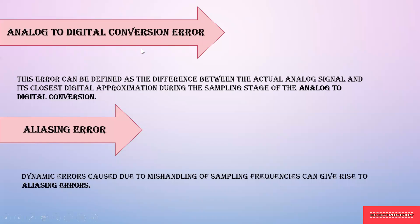Next is analog to digital conversion error. There is a difference between the actual analog signal and its digital approximation, because the sampling rate differs. When an analog signal such as a square wave or triangular wave produces 2.5 volts, that same 2.5 volts cannot be represented exactly in digital form — there will be a small variation due to sampling rate. That is called analog to digital conversion error.